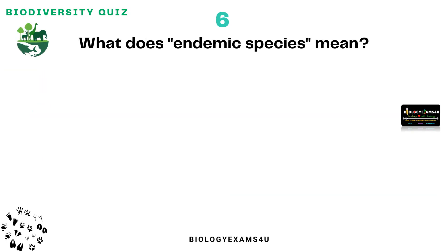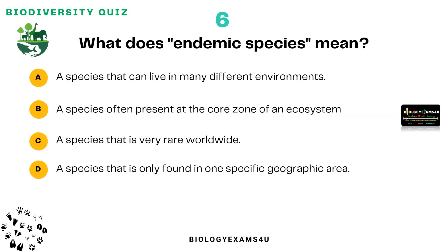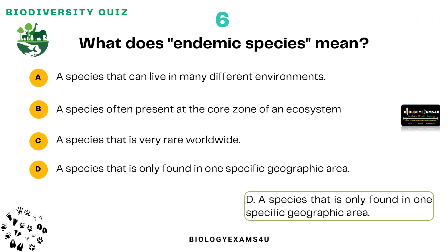Question number six: What does endemic species mean? Option A: Species that can live in many different environments. Option B: A species often present at the core zone of an ecosystem. Option C: A species that is very rare worldwide. Option D: A species that is only found in one specific geographic area. The answer is: endemic species is a species that is only found in one specific geographic area. For example, the panda is endemic to China, and the kangaroo is endemic to Australia.